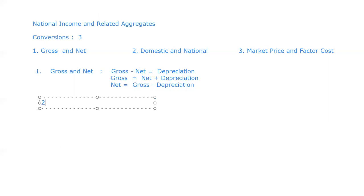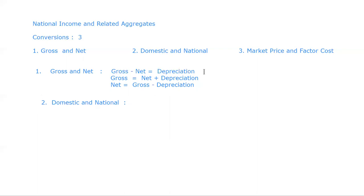Now we come to the second conversion: Domestic and National. Just as depreciation plays an important role in the conversion from Gross to Net and Net to Gross, in the same way when we have to convert Domestic and National, the most important role is played by NFIA.